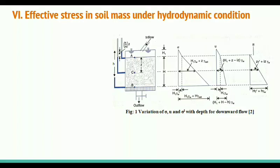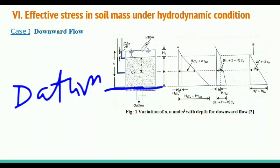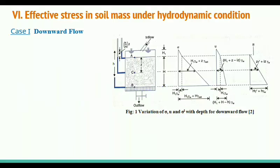Case 1: downward flow. In this figure, you can see a soil sample AB where the length of the soil sample is H, kept vertically. Point C is at a distance Z from point A. The water level at point A is H1. The water level in this soil tank is maintained by adjusting the supply on the top and the outflow at the bottom, and the rate of discharge is constant. In all derivations, we have taken the datum as point B.